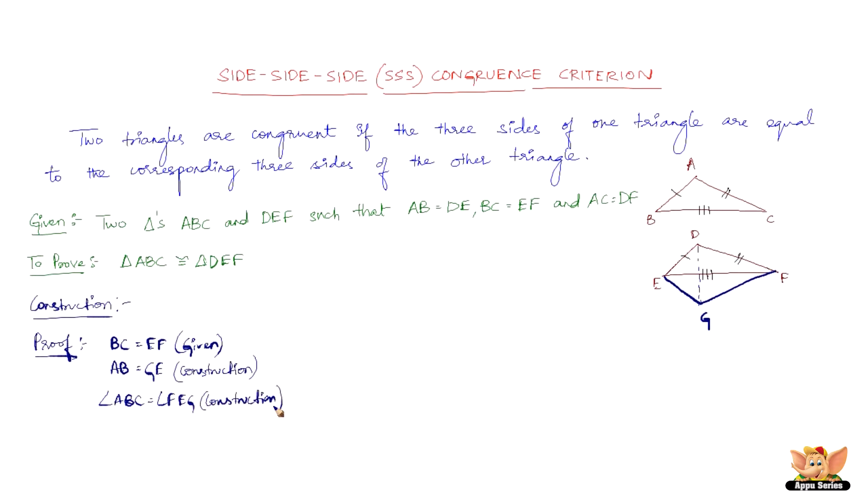And so now by SAS criterion, that is side-angle-side criterion of congruence, we have triangle ABC being congruent to triangle GEF.